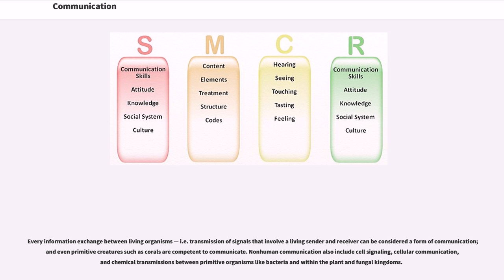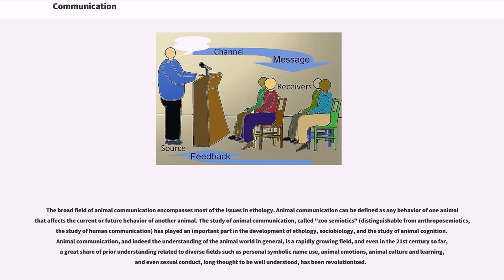The broad field of animal communication encompasses most of the issues in ethology. Animal communication can be defined as any behavior of one animal that affects the current or future behavior of another animal. The study of animal communication, called zoosemiotics, distinguishable from anthroposemiotics (the study of human communication), has played an important part in the development of ethology, sociobiology, and the study of animal cognition. Animal communication, and indeed the understanding of the animal world in general, is a rapidly growing field. Even in the 21st century, so far, a great share of prior understanding related to diverse fields such as personal symbolic name use, animal emotions, animal culture and learning, and even sexual conduct, long thought to be well understood, has been revolutionized.